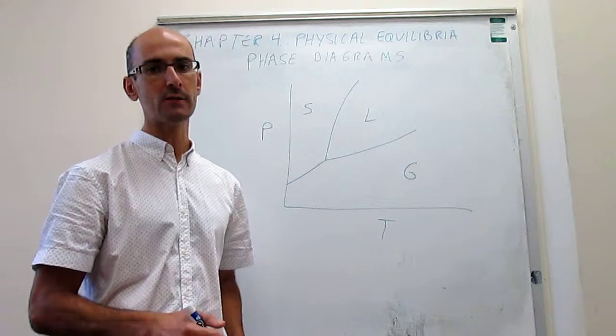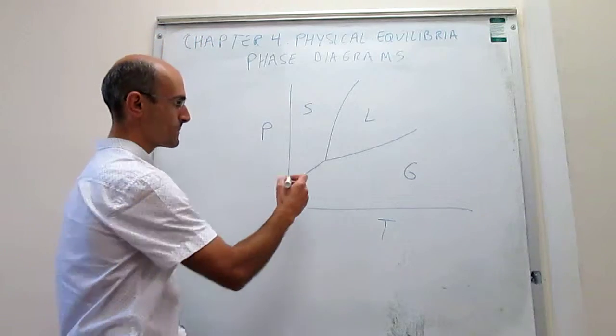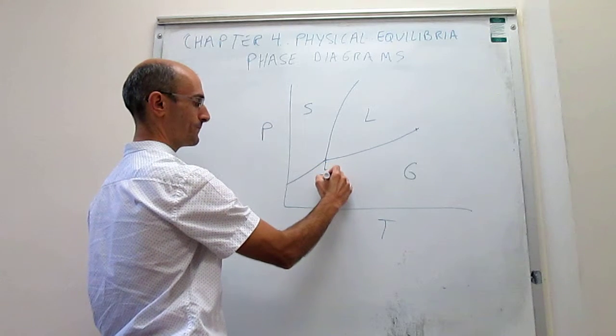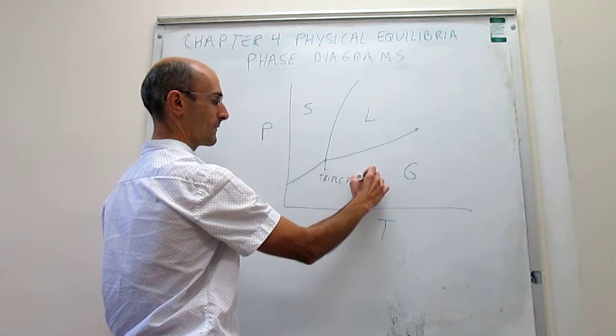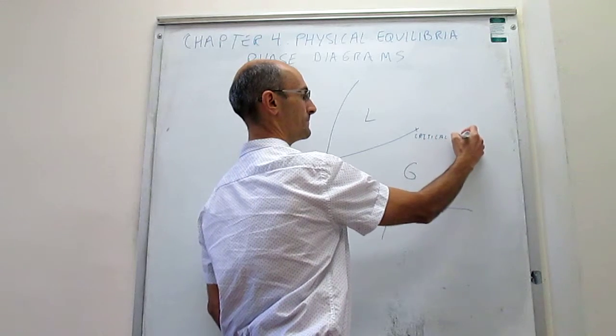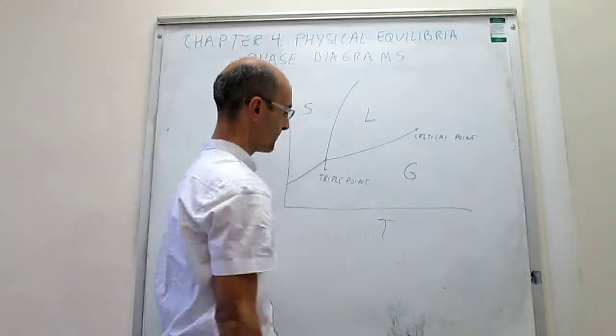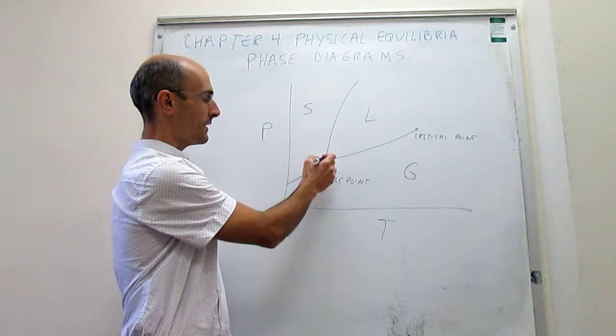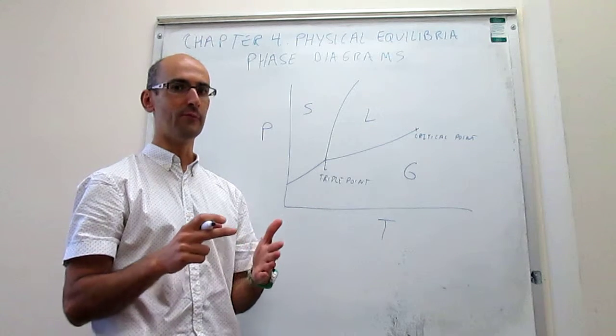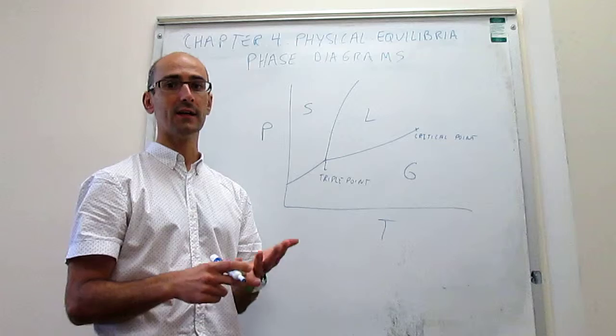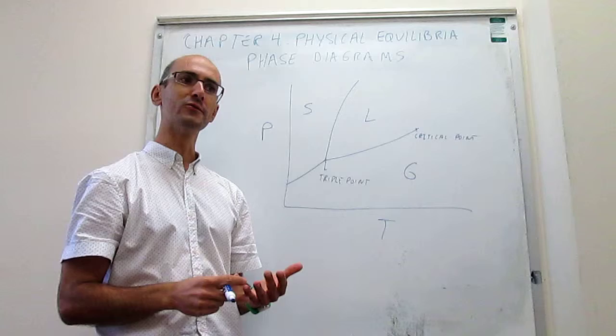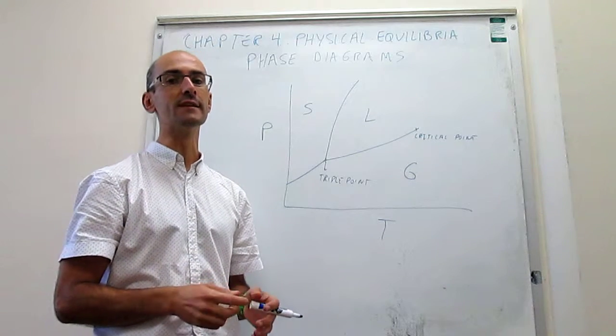This video only tells you about two characteristic points of this diagram, which are this and that. This is what we call the triple point, and this is what we call the critical point. At the triple point, what we have is that there's a coexistence of the three phases. So you have that the gas, the liquid, and the solid can coexist under those conditions. This is a little bit difficult to imagine because it's something that is not generally seen for many substances.